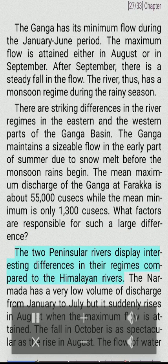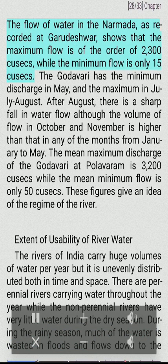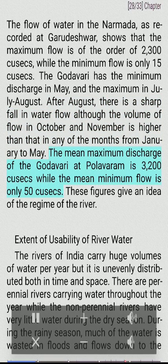The two peninsular rivers display interesting differences in their regimes. The Narmada has a very low volume of discharge from January to July but suddenly rises in August, when maximum flow is attained; the fall in October is as spectacular as the rise in August. The maximum flow of the Narmada at Garudeshwar is of the order of 2,300 cusecs while the minimum flow is only 15 cusecs. The Godavari has minimum discharge in May and maximum in July–August. The mean maximum discharge of the Godavari at Polavaram is 3,200 cusecs, while the mean minimum is only 50 cusecs.